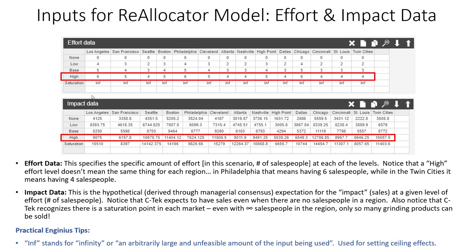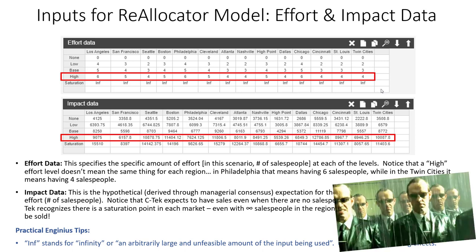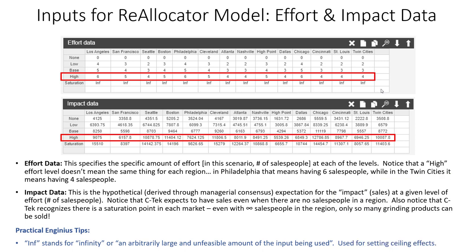In addition, we have a row called saturation. Saturation represents a hypothetical infinity number of salespeople — some arbitrarily large number. There's a point where we simply cannot sell any more product in a given market; we literally run out of people to sell to. So the impact data for saturation is the absolute highest number of sales we can have — a ceiling effect.